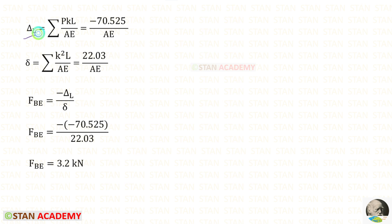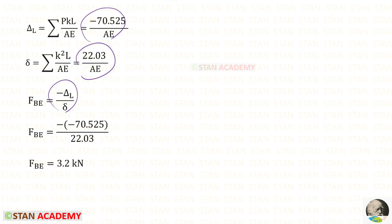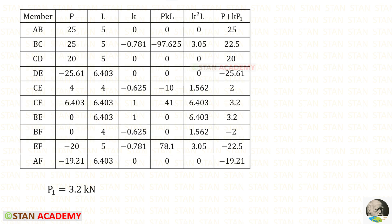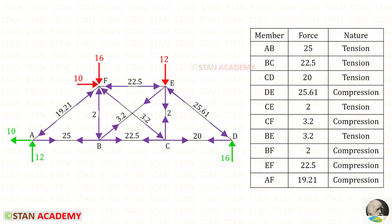To find delta L this is the formula, and to find delta this is the formula. We can apply these two — no need to apply AE because it will be eliminated. For FBE we will get a positive value, which means our assumption is correct — FBE is tensile. Then using this formula we can find all of the member forces. Here I have entered all of the member forces in the truss. Now we are going to end this session. Thank you for watching this video.